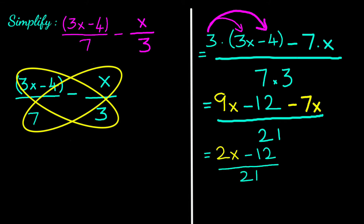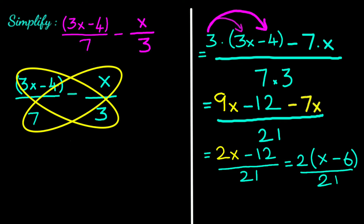If you want to simplify it further, let's take 2 as common. In the numerator we have 2 times (x minus 6), divided by 21. That is the answer.